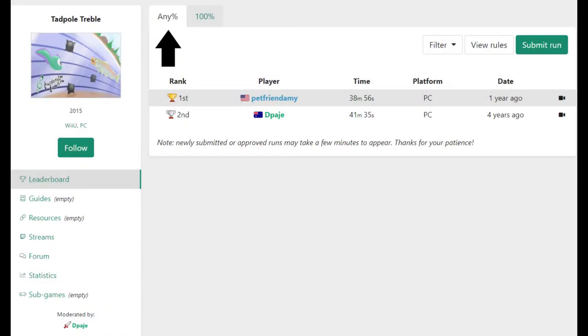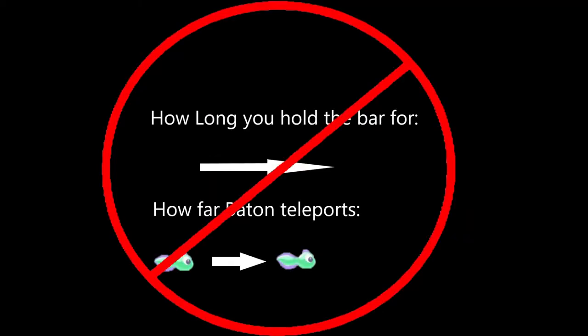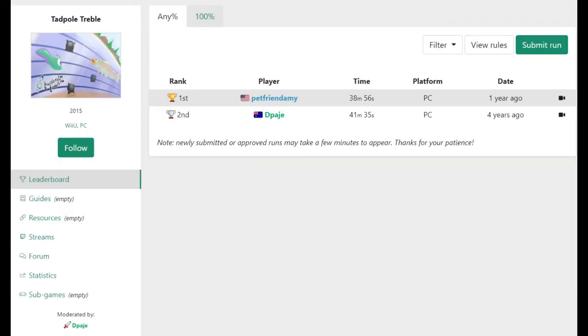In terms of speedrunning, it would appear as if this glitch isn't very useful. Since you teleport as much as you would have traveled without the glitch, there's no way to use this to get ahead of the music, meaning this glitch would be pointless for faster times. However,